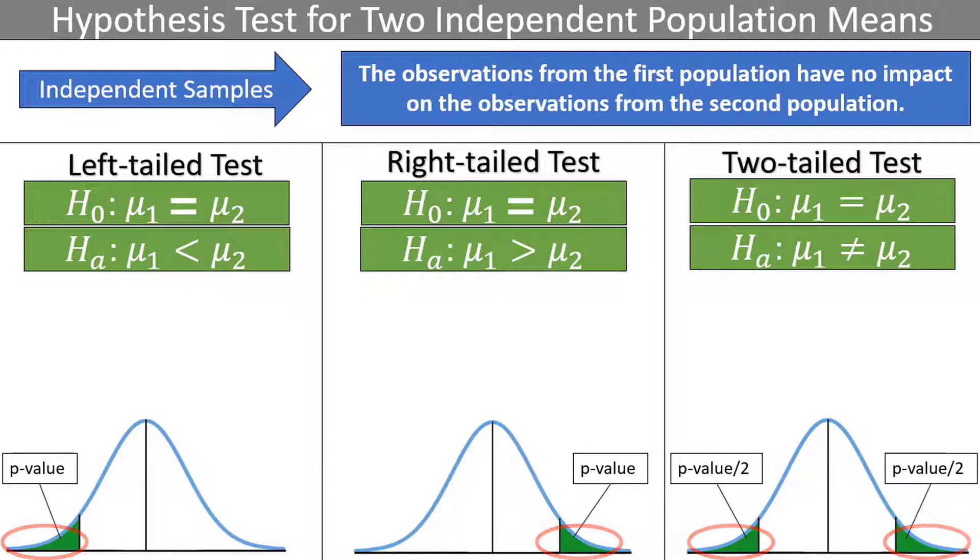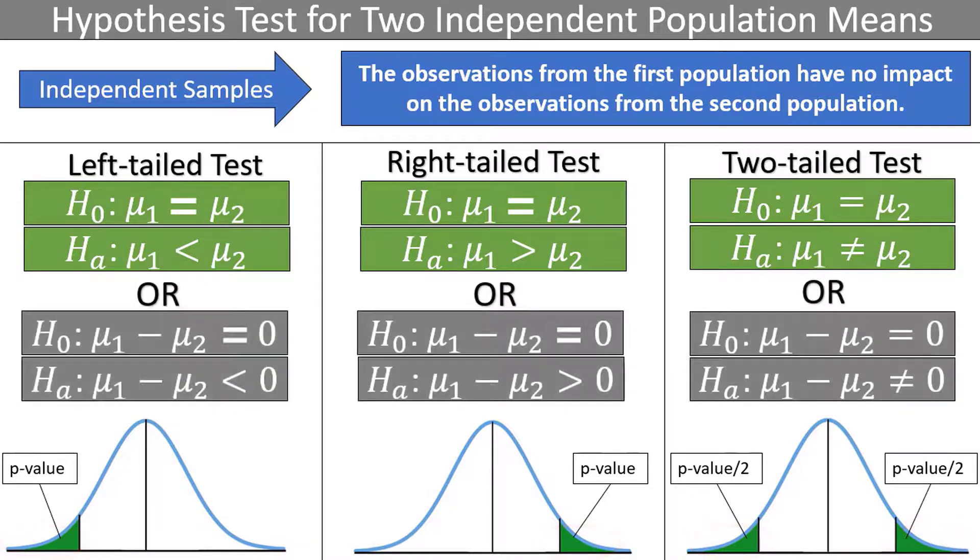Sometimes you will see an alternative way of writing the null and alternative hypotheses, with mu1 minus mu2 on the left-hand side and 0 on the right. This way is equivalent and is desirable if we might want to replace this 0 with some other number.